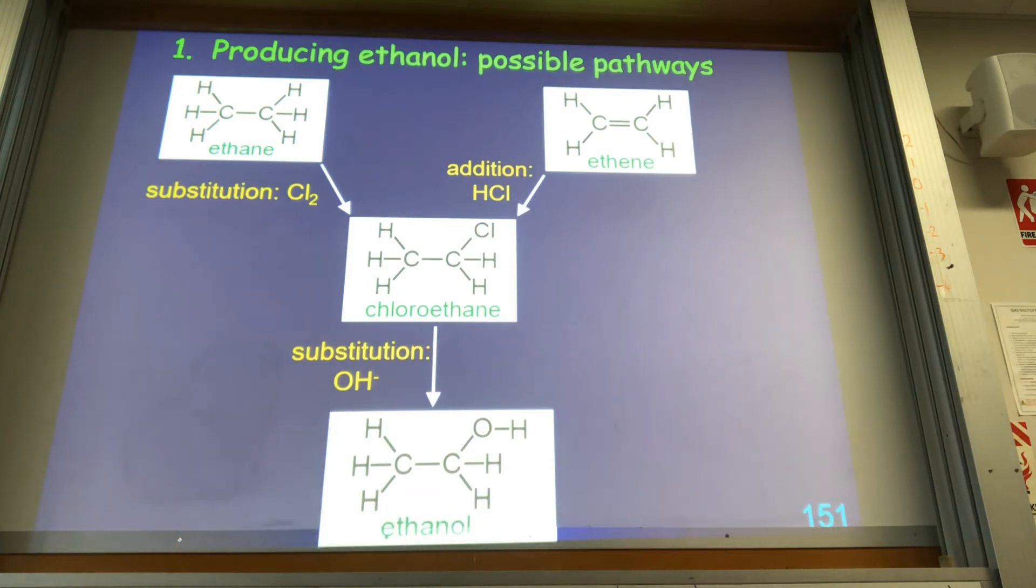Or we can use ethene. You get a much simpler addition reaction with HCl, and then the substitution reaction with ethanol. Or we can do the direct addition - phosphoric acid catalyst, 300 degrees, water vapor - and we get ethanol that way. Which one do we choose?